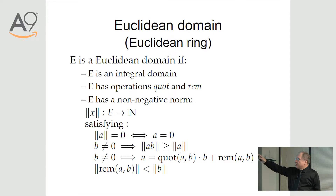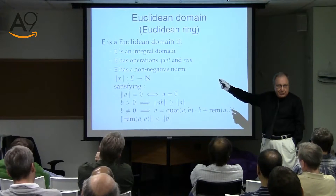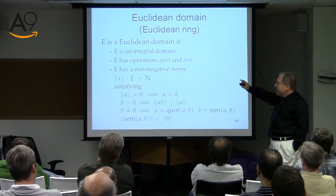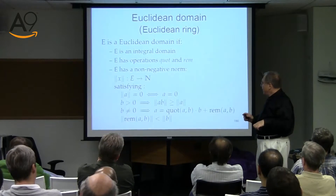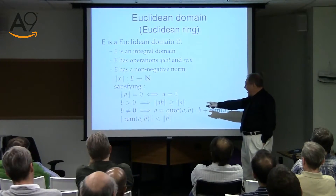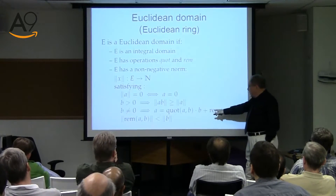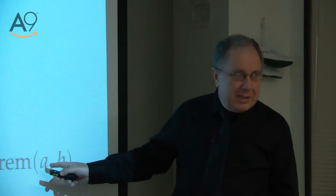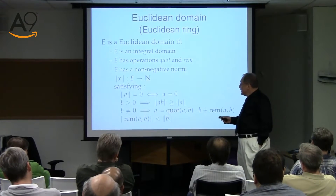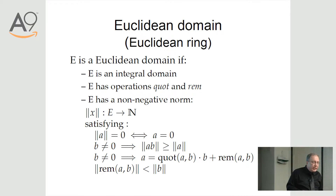We don't really need the quotient — remainder would do — but typically people define both. The key axiom: for every A you can divide by non-zero B, getting quotient plus remainder. This is the same as with integers — just the definition of division with remainder. And finally there is a non-negative norm.